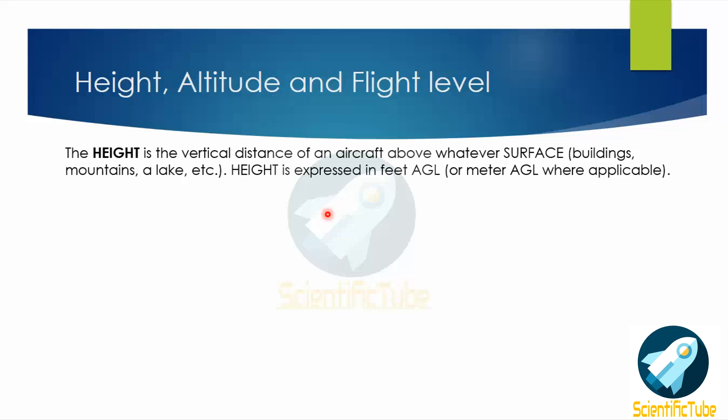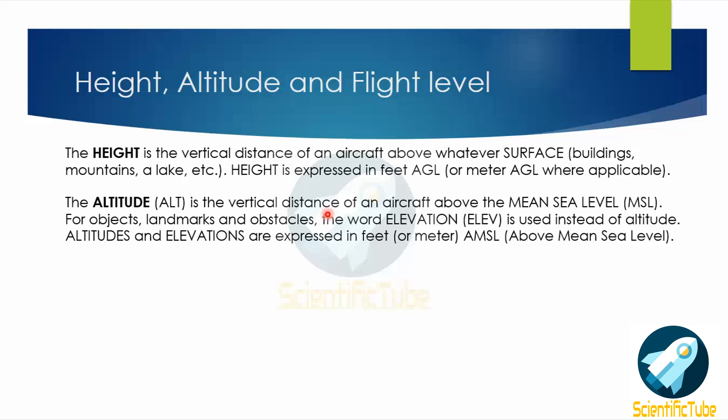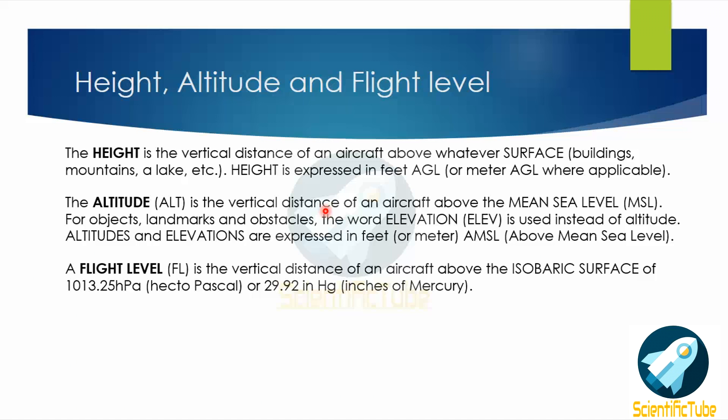Next we'll speak about altitude. Altitude is the vertical distance of an aircraft above the mean sea level. For objects, landmarks, and obstacles we use the word 'elevation,' not 'altitude.' Both altitude and elevation are expressed in feet or meters above the mean sea level.